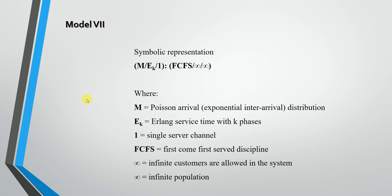Model 7 has the symbolic representation M/Ek/1:FCFS/∞/∞. Here, Ek represents an Erlang service time distribution with k phases — the service distribution is represented by an Erlang service time with k phases.